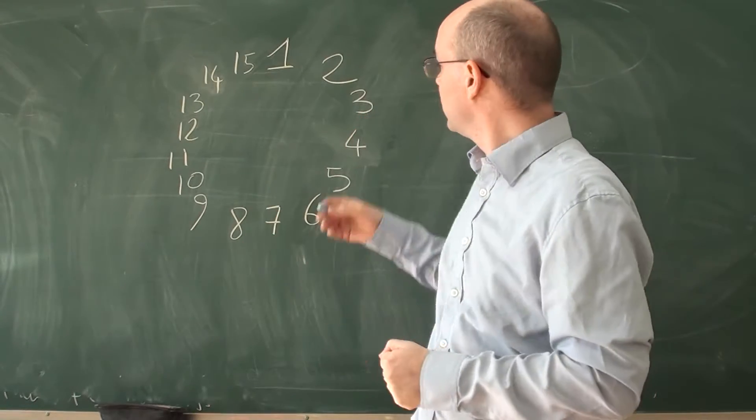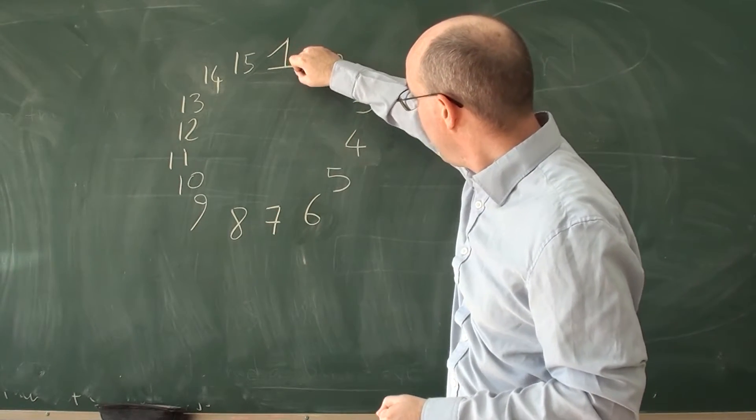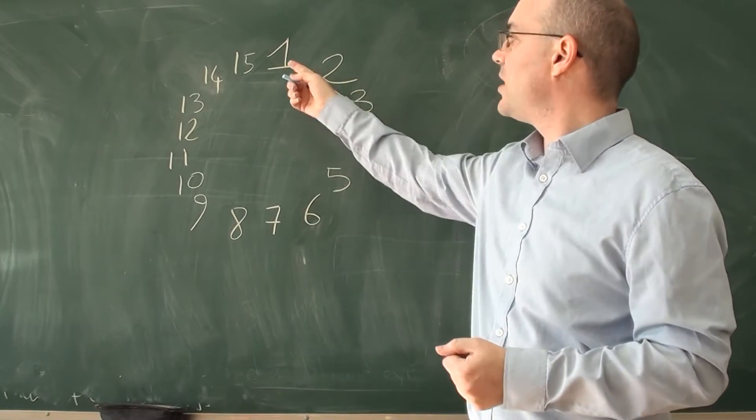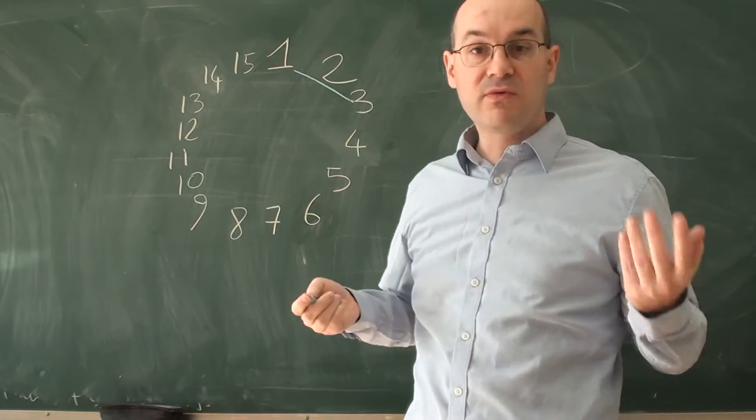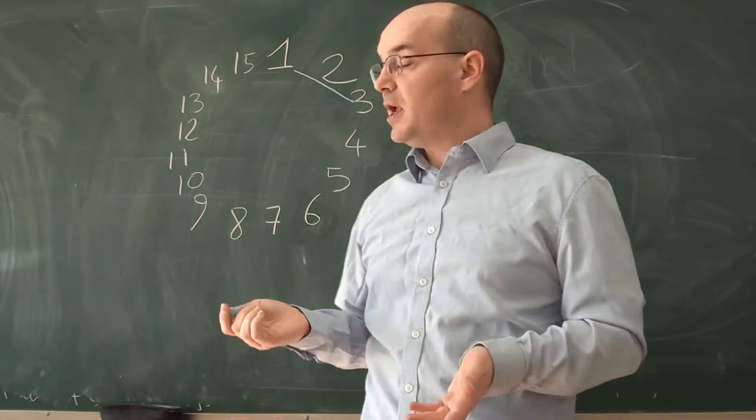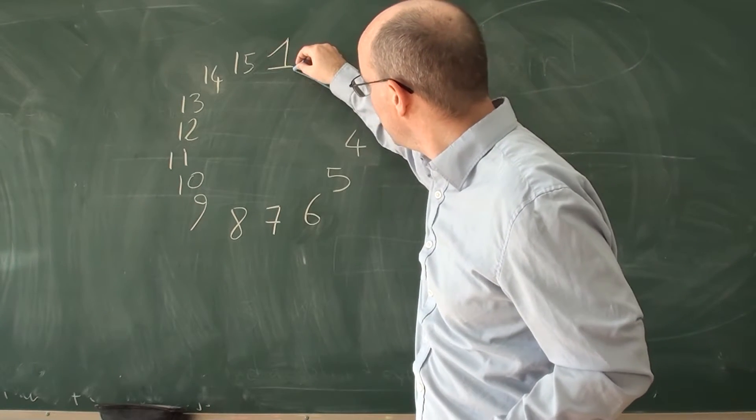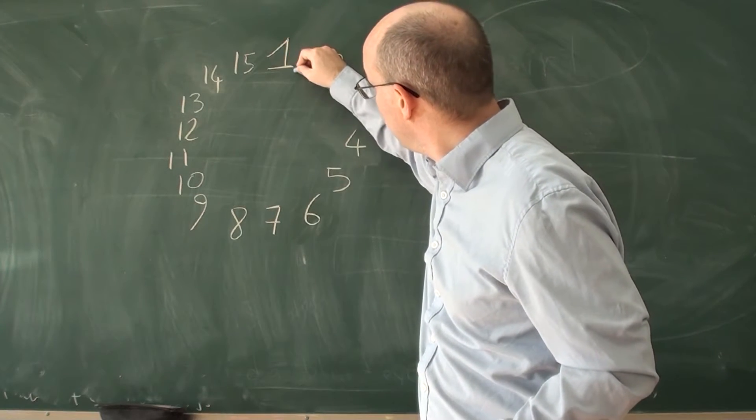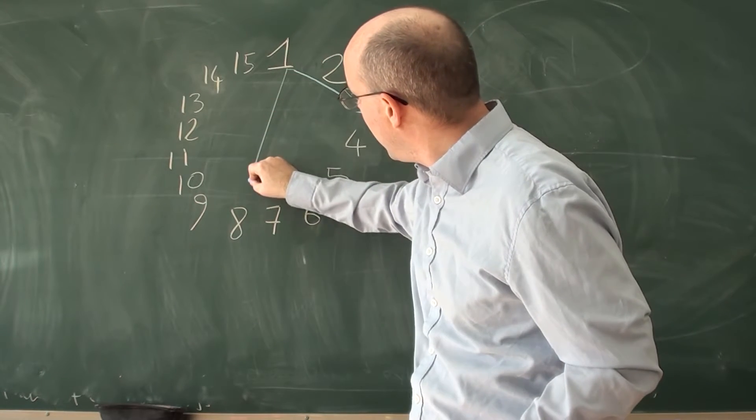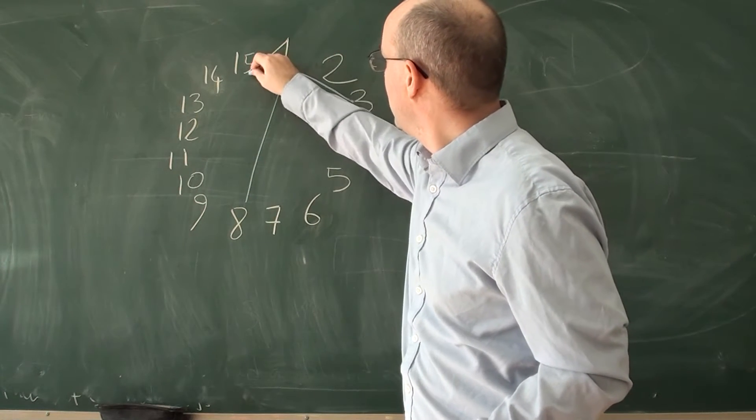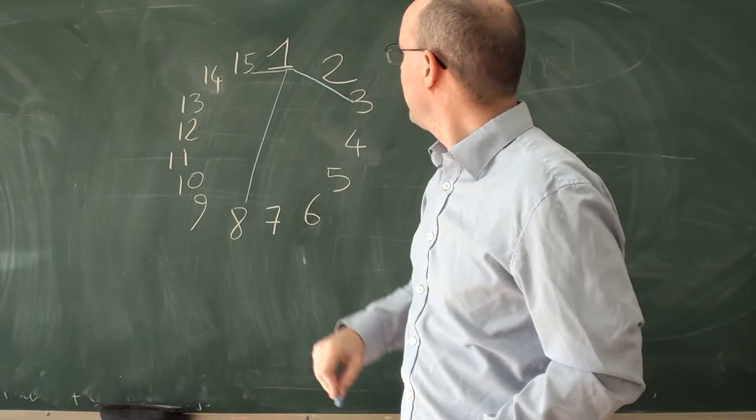For instance, you're going to link 1 and 3 because the sum 1 and 3 is 4, which is a perfect square. And you continue like this, which is very easy actually because you have 1 and 3, 1 and 8, and 1 and 15, and then you're done with 1.